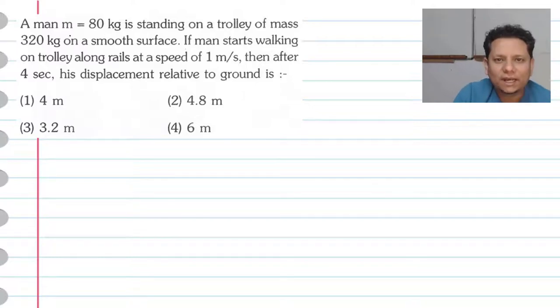Next question: A man with mass m equal to 80 kg is standing on a trolley of mass 320 kg on a smooth surface. If the man starts walking on the trolley alongside the rail at a speed of 1 meter per second, then after 4 seconds his displacement relative to ground will be what? Options are 4 meter, 3.2, 4.8, or 6 meter.